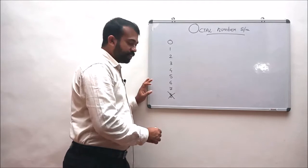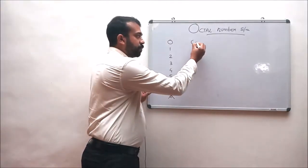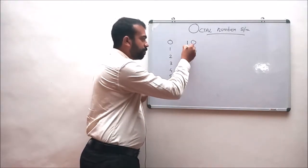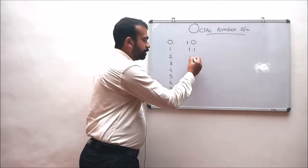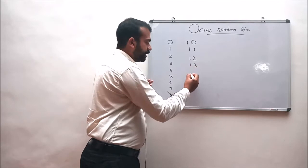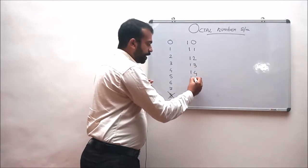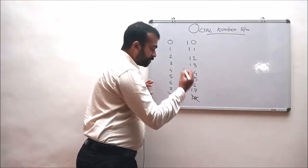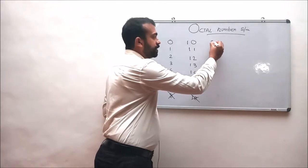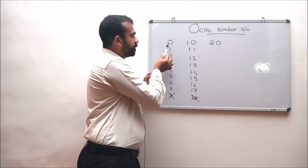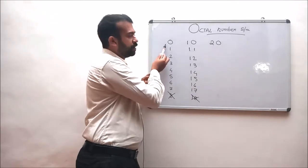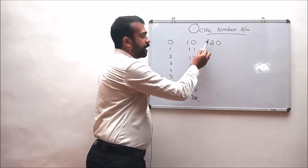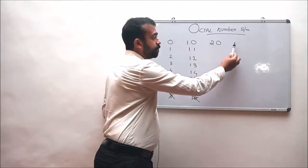Instead of writing 8, we write it as 10 (0 with a prefix of 1). So the next numbers are 11, 12, 13, 14, 15, 16, 17. Instead of writing 18, we write it as 20 (0 with a prefix of 2). So in the first set of numbers the prefix is 0, in the second set the prefix is 1, in the third the prefix is 2, and the next series the prefix value will be 3.